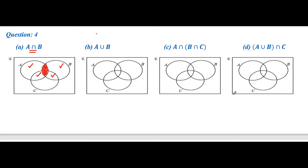What is the rule here? First we have to identify A. This is the region of A, this is A, this is A, and this region of A as well. Now we have to identify B — this is the region of B, this is the region of B, here and here as well.